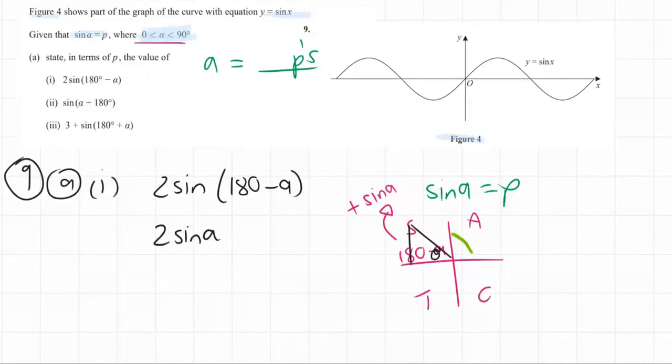That's the exact same thing as this one. It would be more like exactly the same as taking 180 minus this. So sine a is equal to p, therefore we have 2 times p. That's number i.